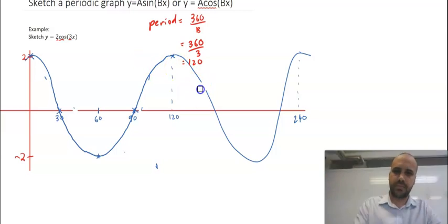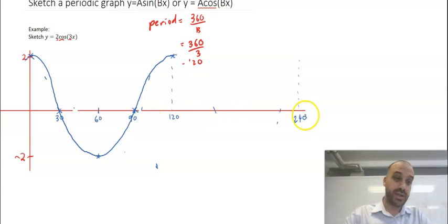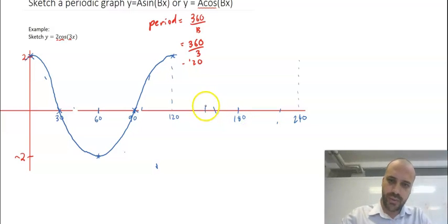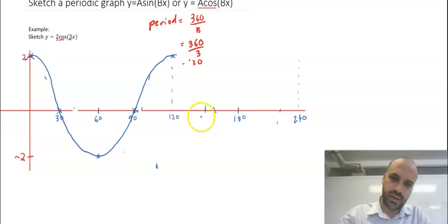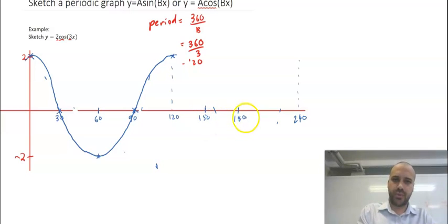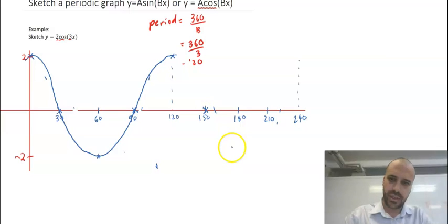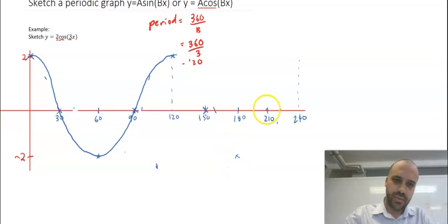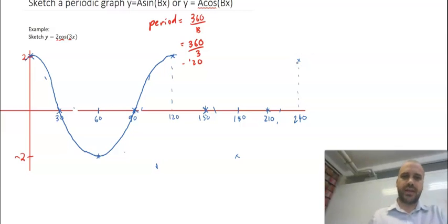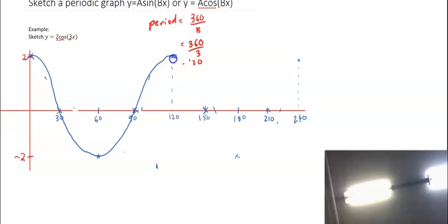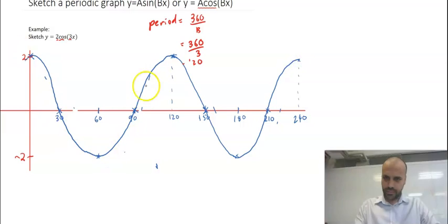You can see that is a much neater curve. Now we can do the same thing with this second one here. Halfway between 120 and 240 is 180. Halfway between 120 and 180 is 150, and halfway between 180 and 240 is 210. We're going to pass through here, get down to the bottom, and draw a nice smooth curve down, back up, and down again.